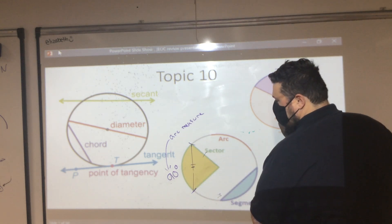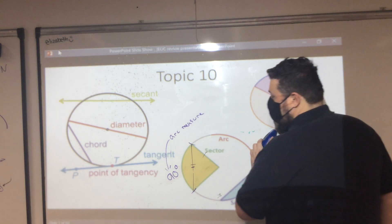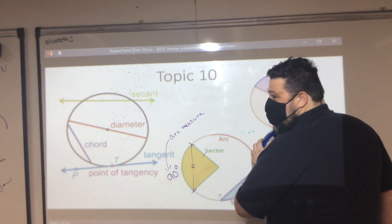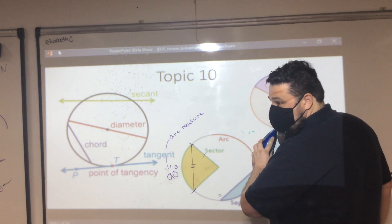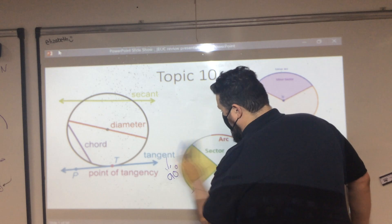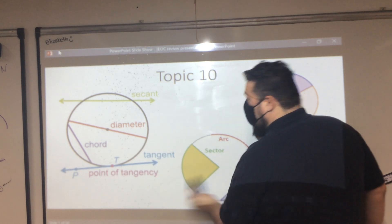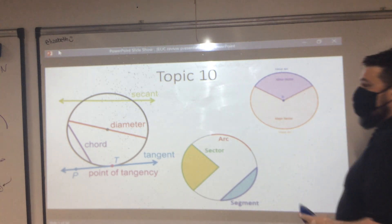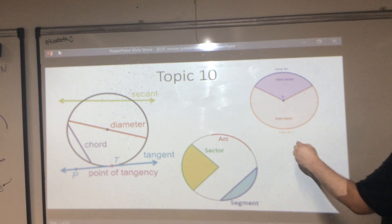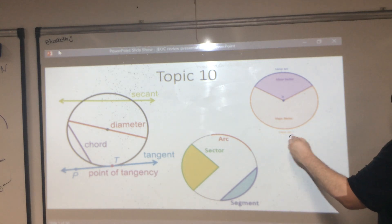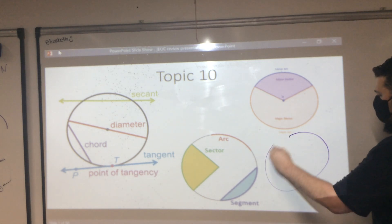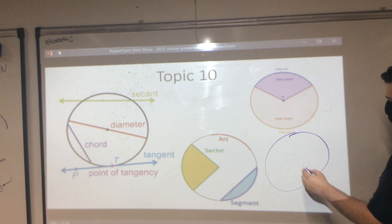Now let's go to what Brie started answering me about — that circle I drew. Brie, what kind of angle do we have here? Do you know the name of that? It's an inscribed angle.